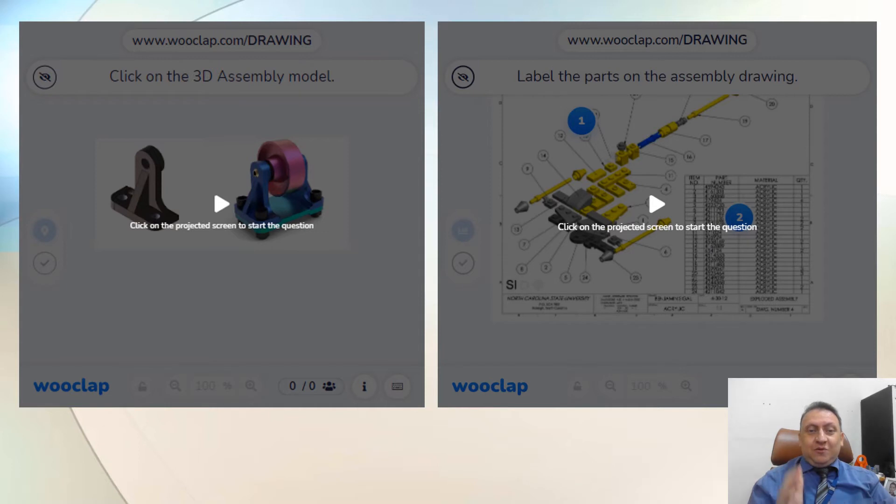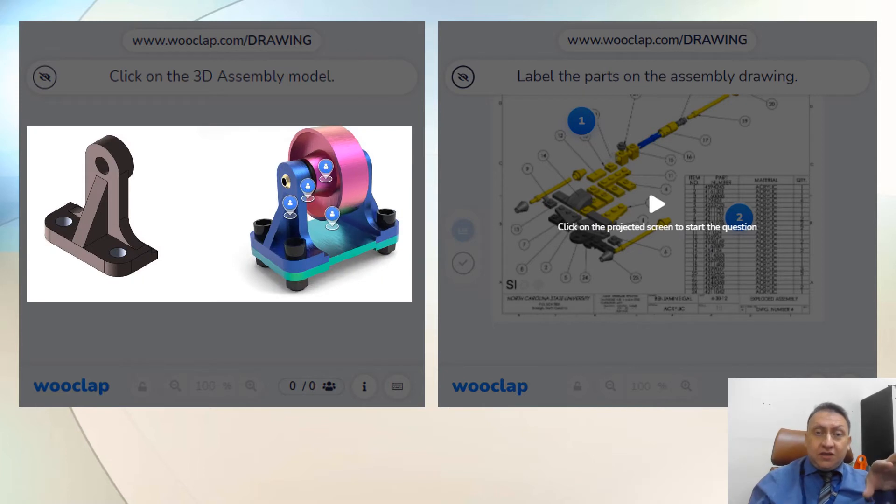Now, let's move to this small game again to the Wooclap. Scan the QR code again, or if you already have it, just let me know. The first question, click on the image itself, click on the Wooclap, select which one of these two is assembly or component. So click on the image. This is for the first question.